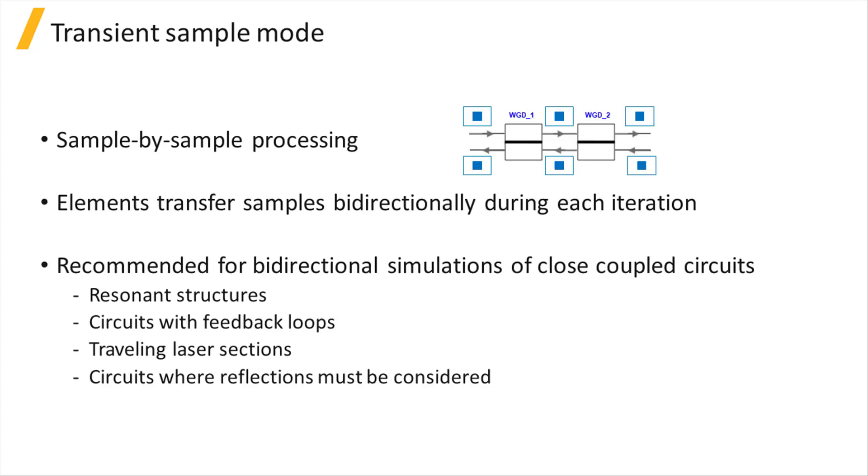In the transient sample mode, a sample-by-sample processing method is used where each invocation of an element accepts one sample from each input port of the element and produces one sample at each output port.